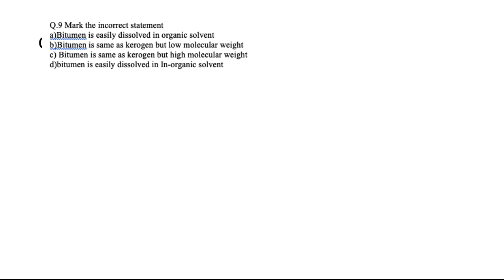Question eight: mark the incorrect statement. They are asking about bitumen and kerogen — both are hydrocarbons. Kerogen has a higher molecular weight compared to bitumen, and bitumen can be easily dissolved in organic solvents. Option C states that bitumen has the same nature as kerogen but high molecular weight — that is incorrect. Bitumen always has low molecular weight. So the right answer is C.